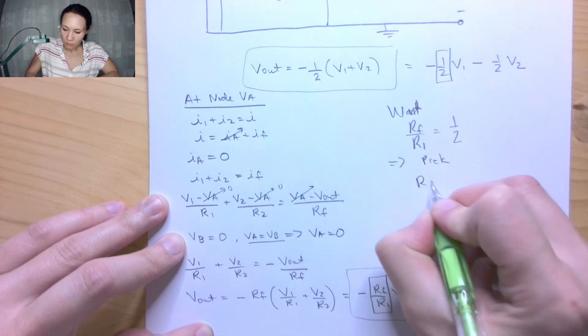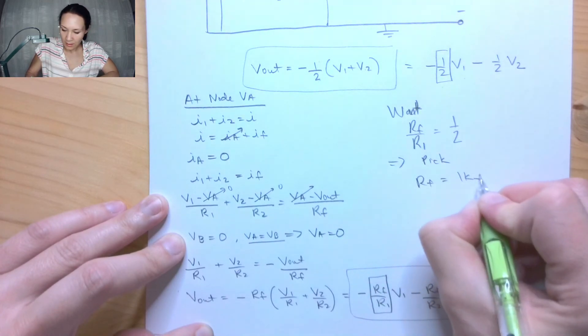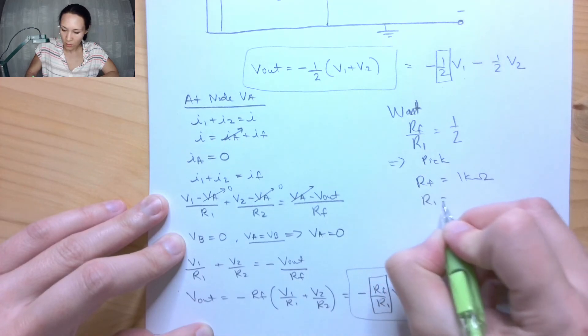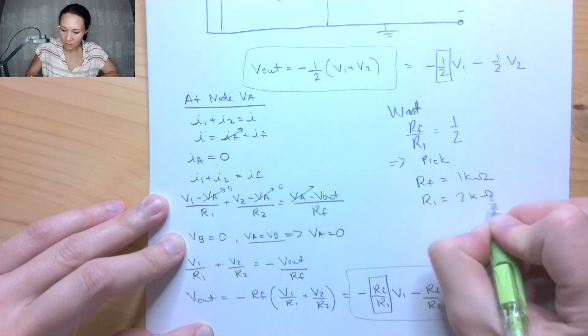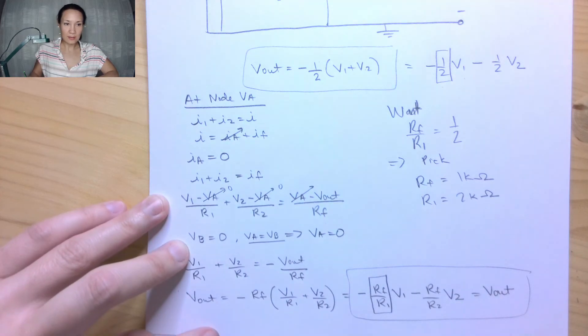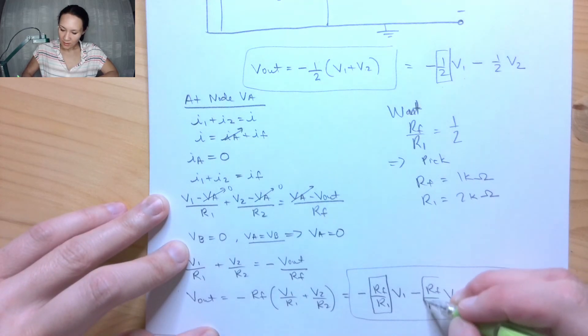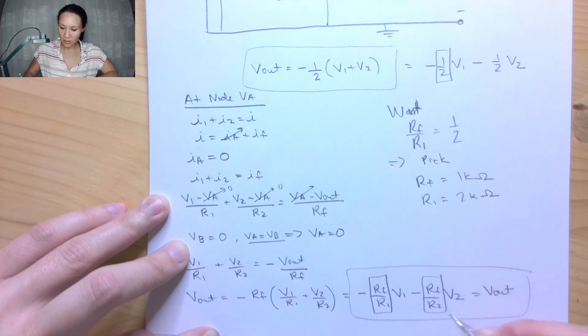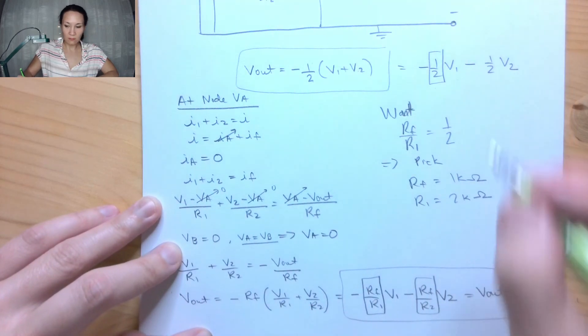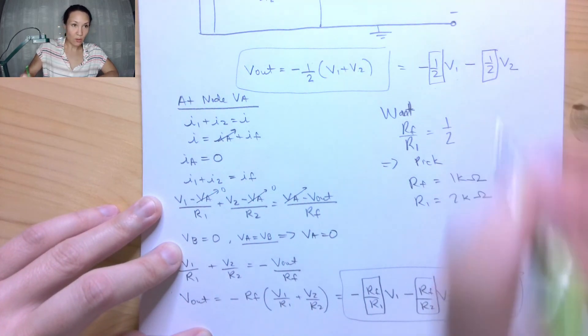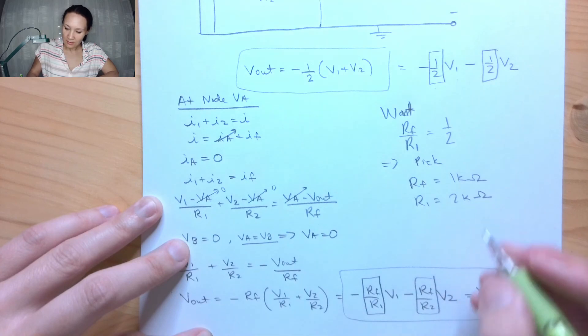So that means we can pick, we can let Rf be 1k ohm resistor and we can let R1 be a 2k ohm resistor and that will meet our constraints. So we, at the same time, we simultaneously have to meet this constraint where this coefficient in front of the V2 is also a half.